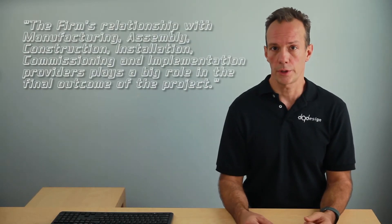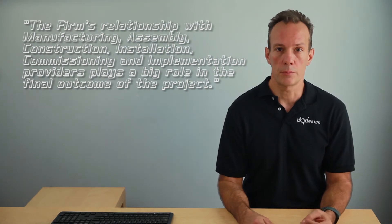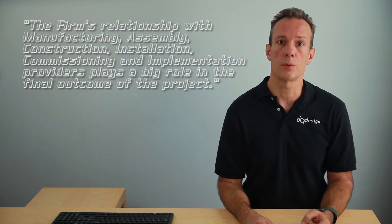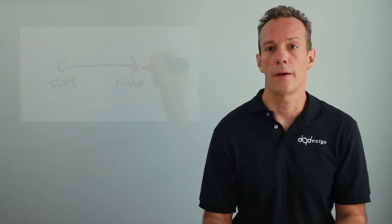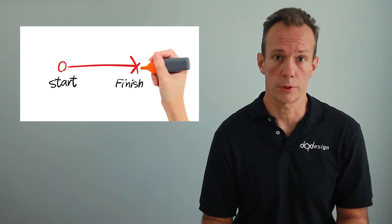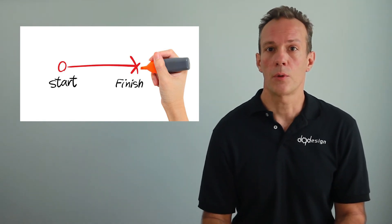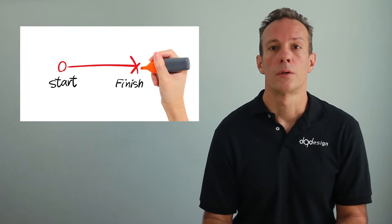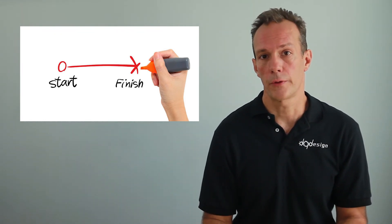Manufacturing, assembly, construction, installation, commissioning, and implementation. The firm's relationship with those providers plays a big role in the final outcome. Having experienced provider contacts related to your project is extremely important. You'll likely want the firm involved through project completion and to provide oversight of these steps. Don't forget to include all this in your firm evaluation.